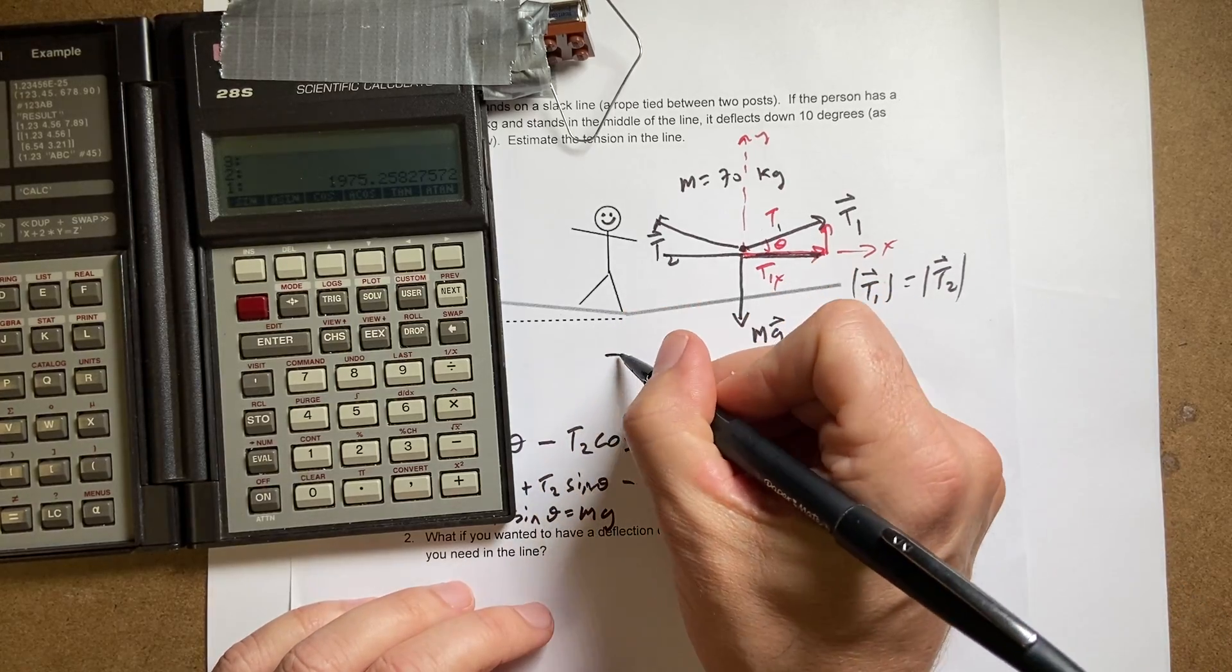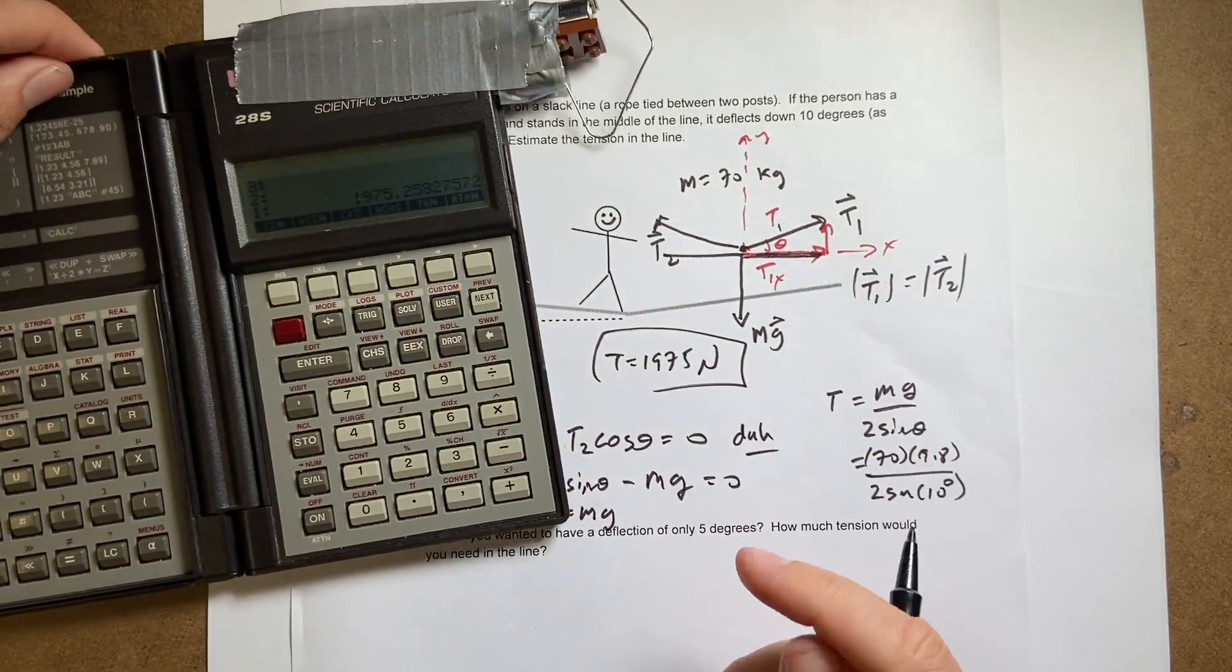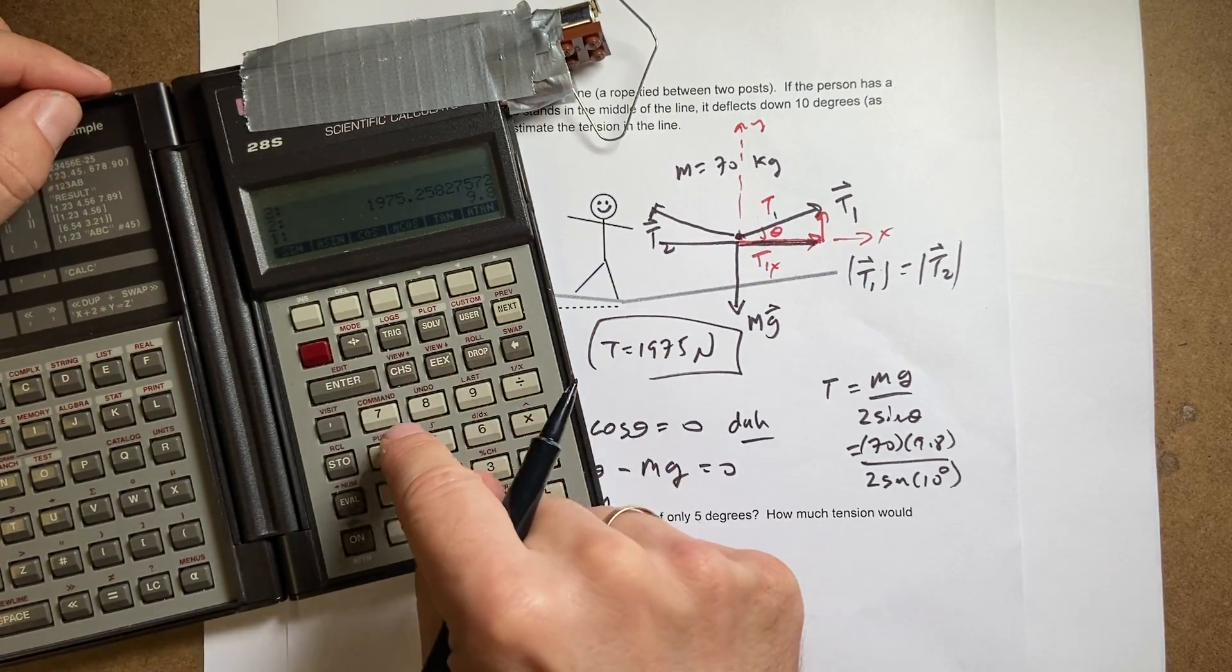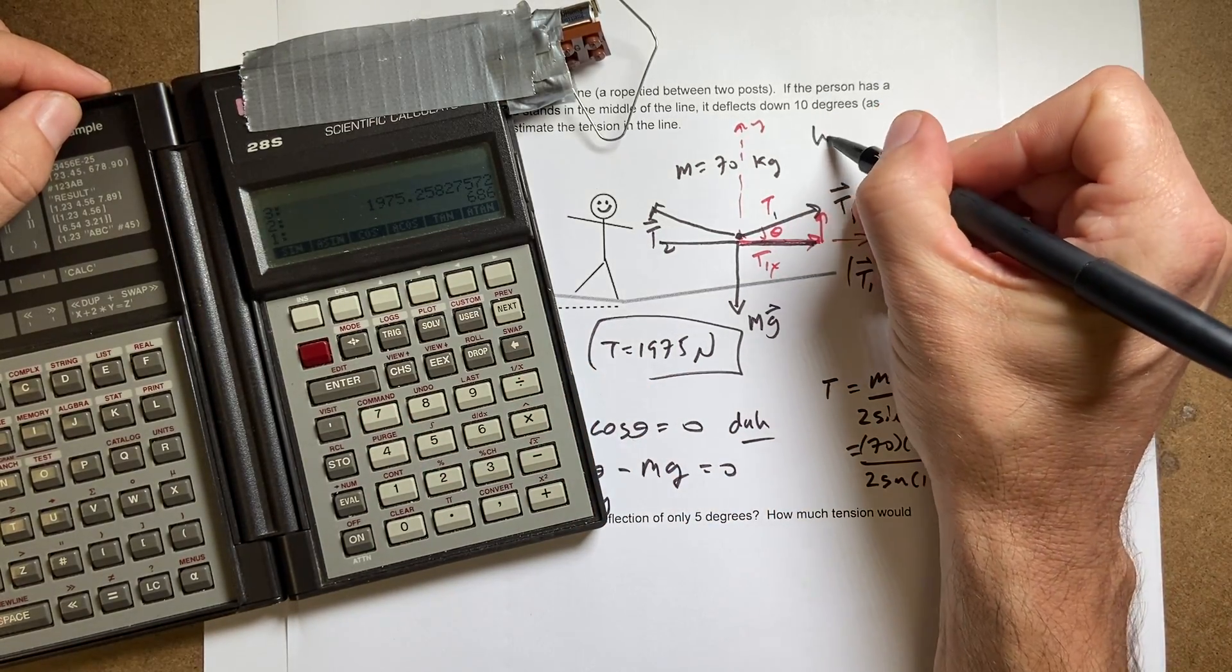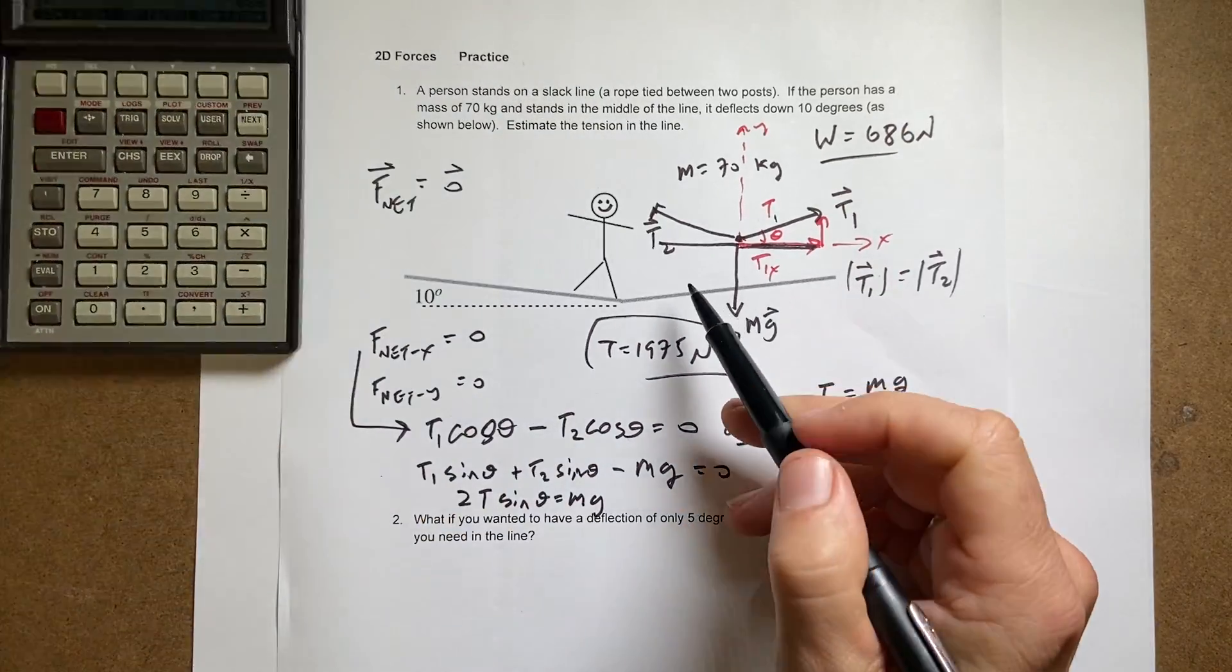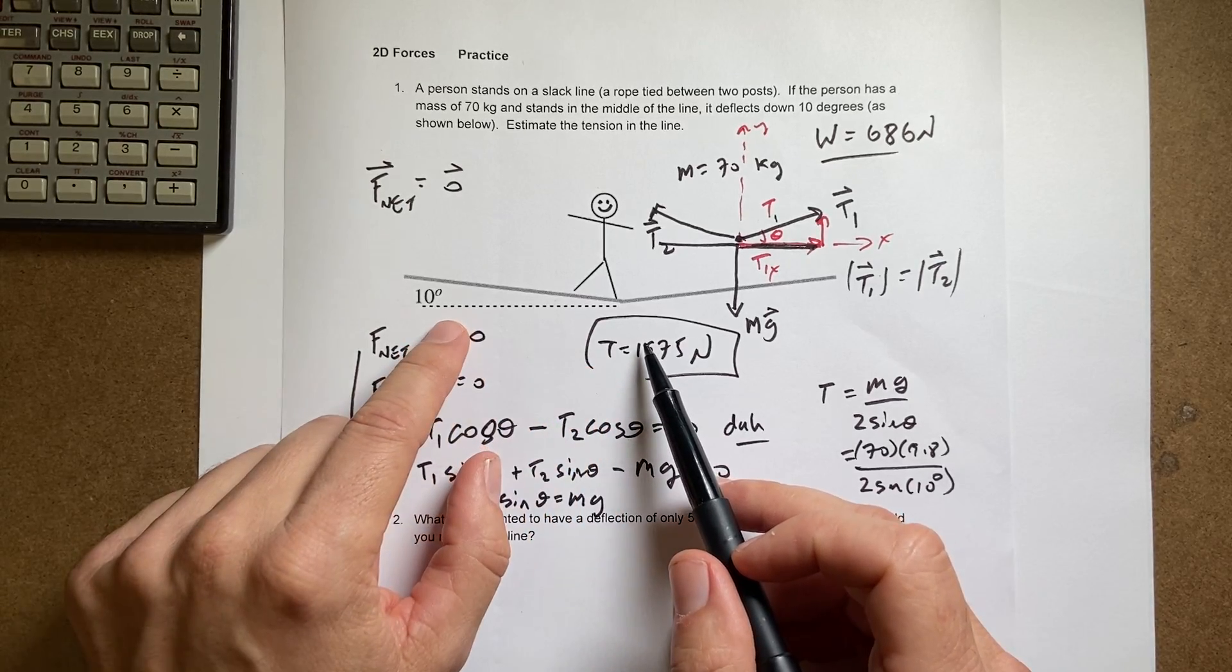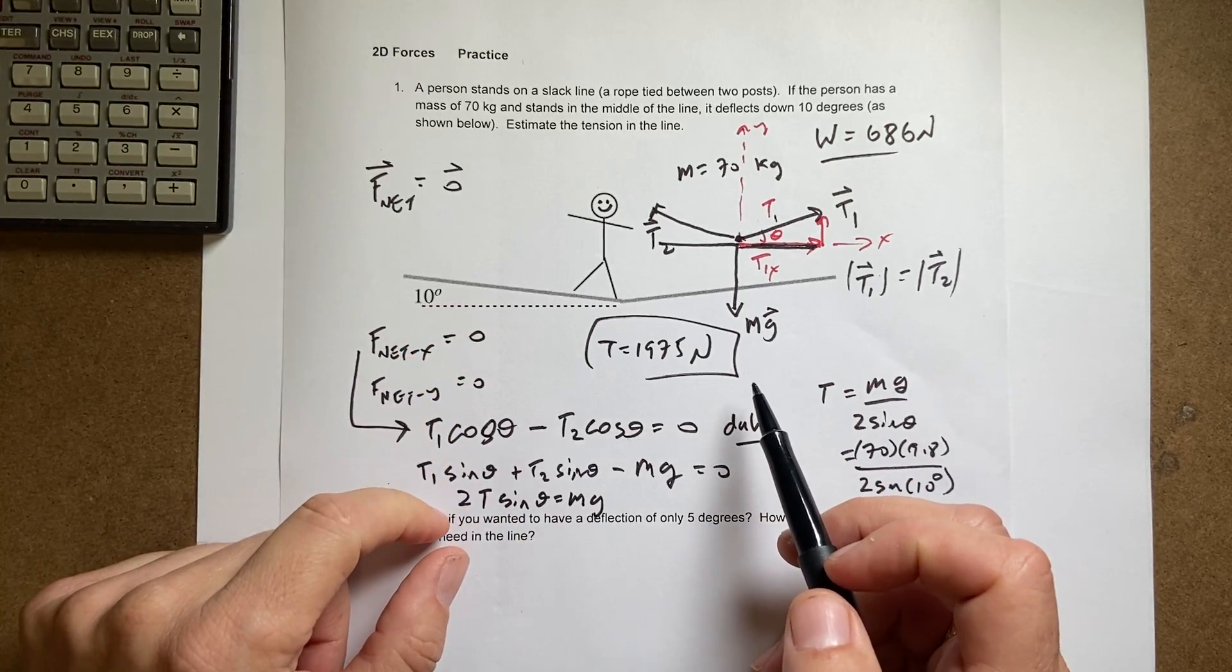So 1975. So T, 1975 newtons. Let's just make a quick comparison to the mass, the weight of the person. So if I do 9.8 enter 70 times, 686 newtons. So you see here that the tension in the line is extreme compared to the weight of the person. It has to be because only the vertical component of that has to balance the gravitational force.